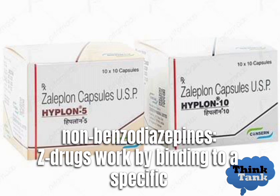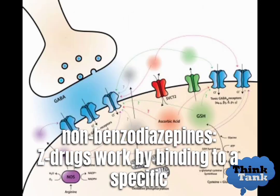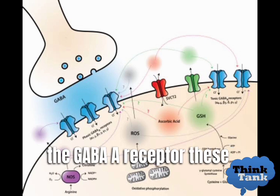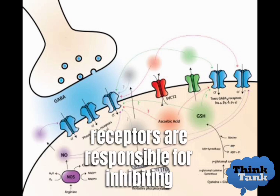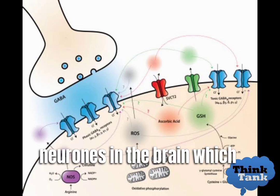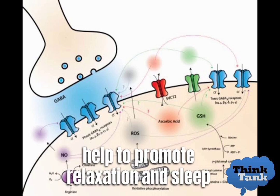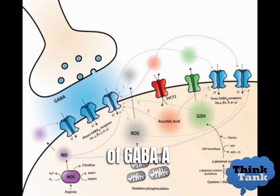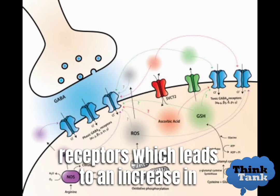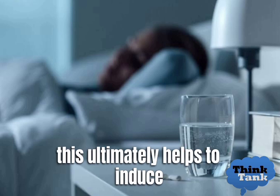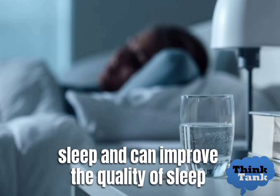Non-benzodiazepines, or Z-drugs, work by binding to a specific type of receptor in the brain called the GABA-A receptor. These receptors are responsible for inhibiting the activity of certain neurons in the brain, which can help to promote relaxation and sleep. Z-drugs enhance the activity of GABA-A receptors, leading to an increase in inhibitory signals in the brain, which ultimately helps to induce and improve the quality of sleep.